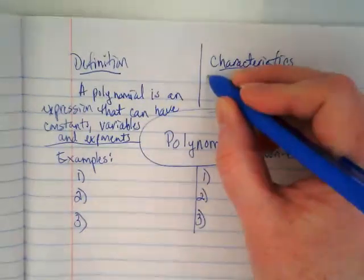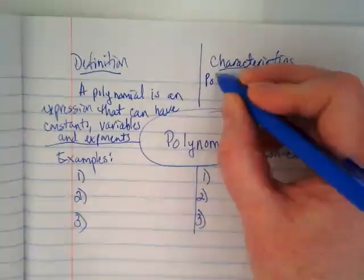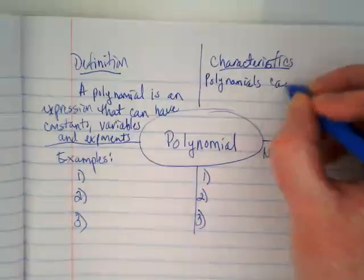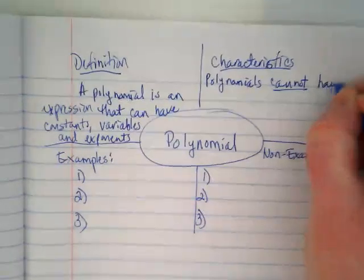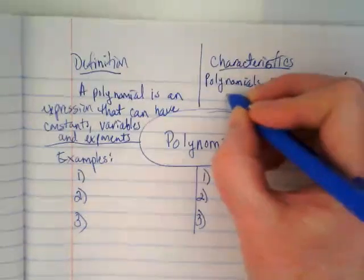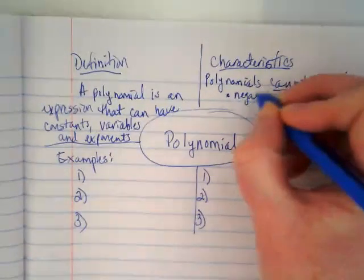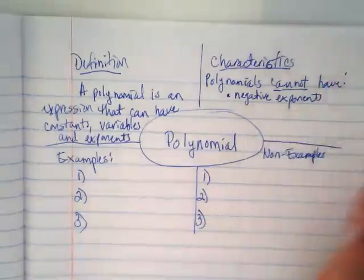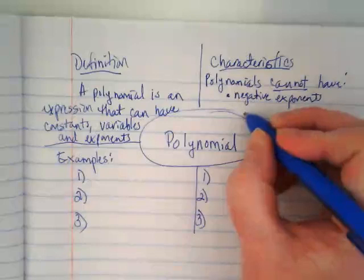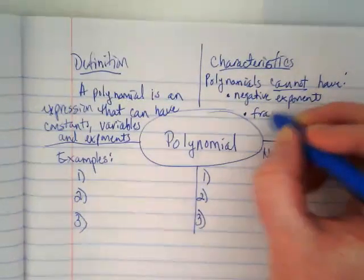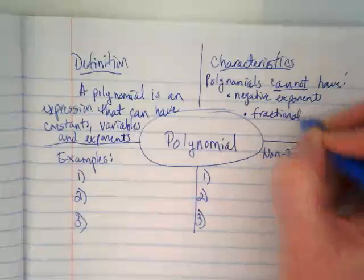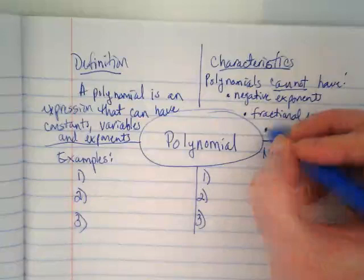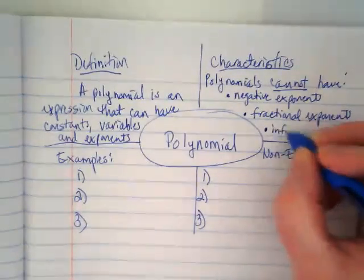Characteristics. We're going to make a list of things that polynomials cannot have. They cannot have negative exponents. They cannot have fractional exponents. And they cannot have infinite terms.